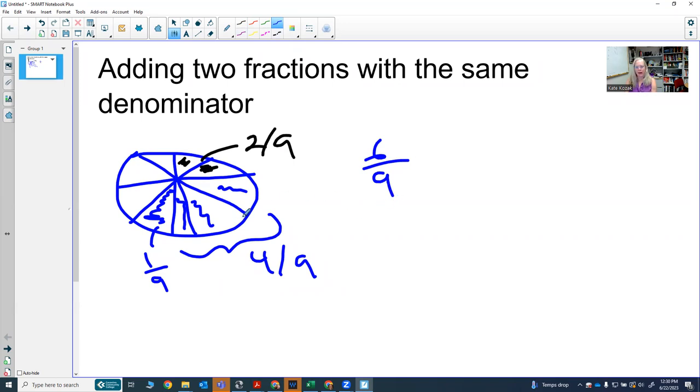Notice if you add four plus two, you in fact get six. So the numerator is just counting the number of one-ninths you have. We have six one-ninths. We can think of this as four-ninths plus two-ninths, which is in fact six-ninths. Notice at this point, the two fractions have the same denominators and you can just add the numerator. That's basically what you do.